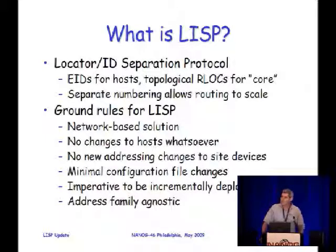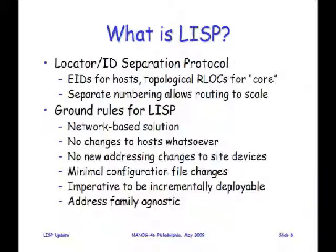So what is LISP? It stands for Locator ID Separation Protocol. It's a way of taking the internet address space and creating two numbering spaces out of it. One is a set of endpoint identifiers — EIDs — assigned to hosts. They're not routed on the global routing system, so they don't contribute to routing system growth. The other are routing locators, or RLOCs, that are topologically assigned — for most practical purposes that means provider assigned — and they're used for the actual global routing system, BGP between providers. This separation allows us to use topologically significant numbering for the routing system while having topologically independent numbering for sites, enabling provider portability and avoidance of renumbering.